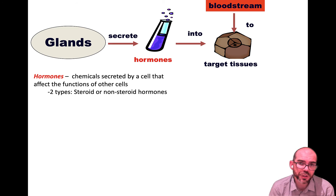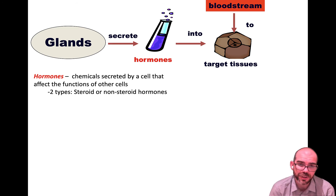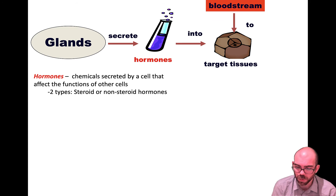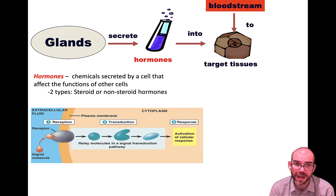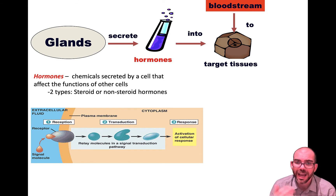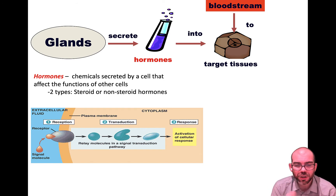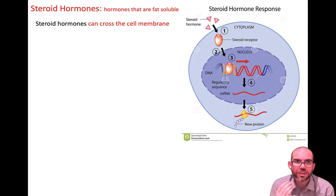There are two main classes of hormones that we need to understand: steroid and non-steroid hormones. In both cases, they're going to work by a signal transduction pathway — they're going to be received, transduced, and respond. How that occurs, though, is slightly different in each case. So let's look at a steroid hormone.